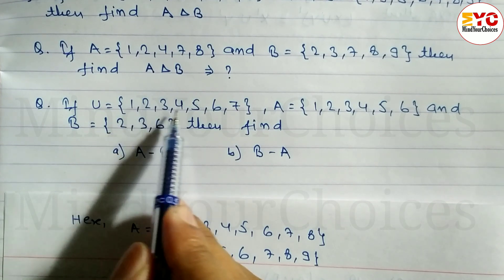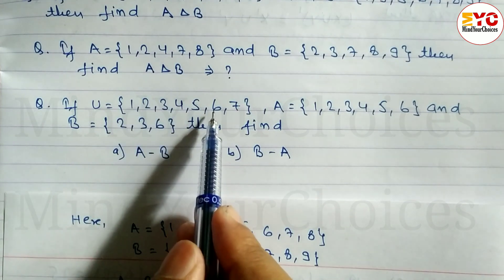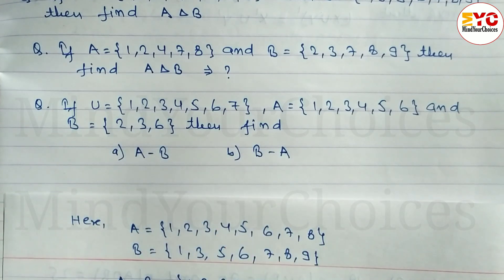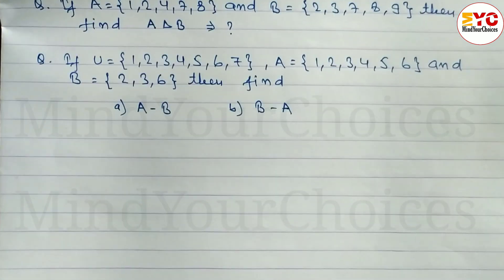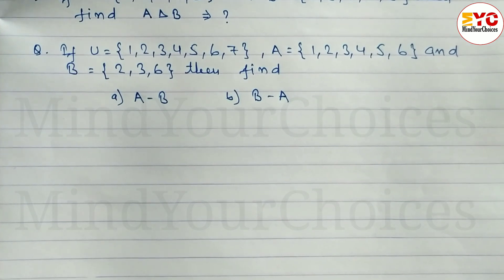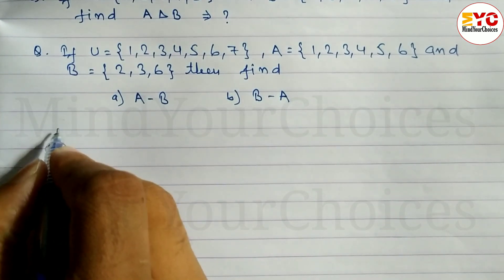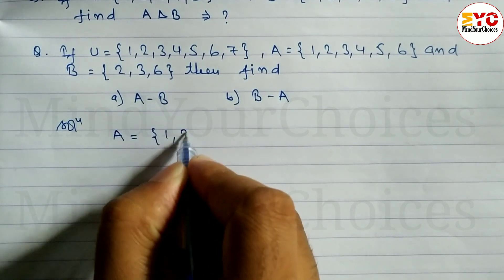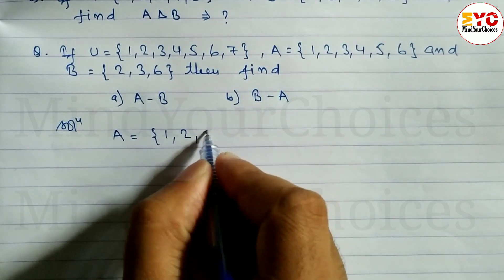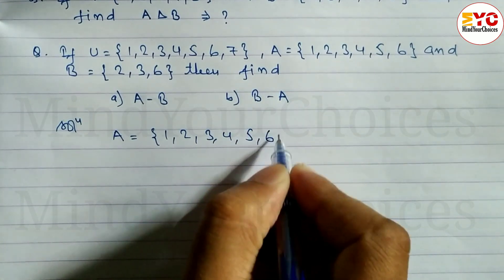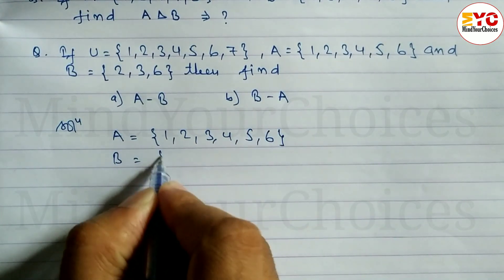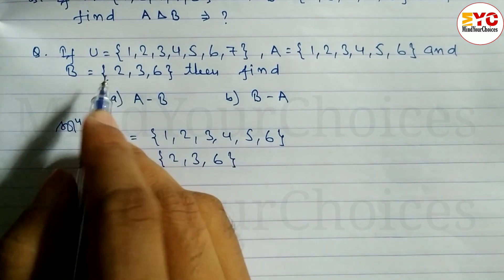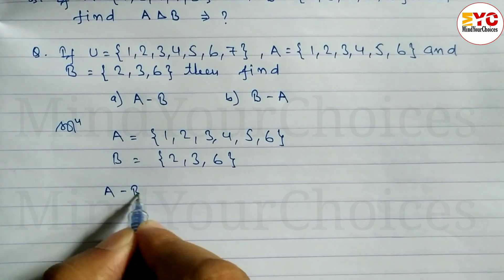Next question: if U = {1, 2, 3, 5, 6, 7}, A and B are also given, then find A minus B and B minus A. We have to find out the difference of A minus B and B minus A. So the solution: A = {1, 2, 3, 4, 5, 6} and B = {2, 3, 6}. After this we have to find out A minus B.